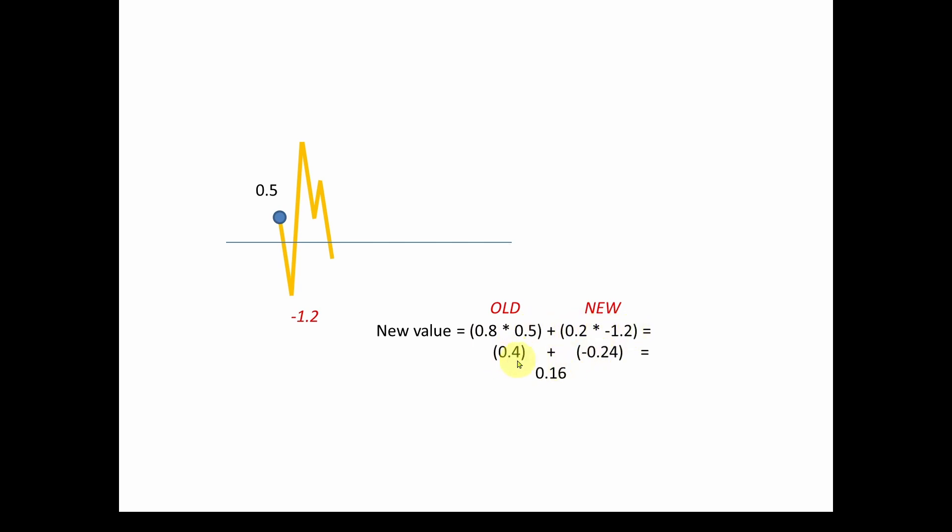And that gives us a 0.4 minus a 0.24, which gives us a 0.16. So our new value, instead of taking 1.2, it's going to be 0.16. Now, if the sine wave is going like that, it's not actually correct, but at least it's a lot better.